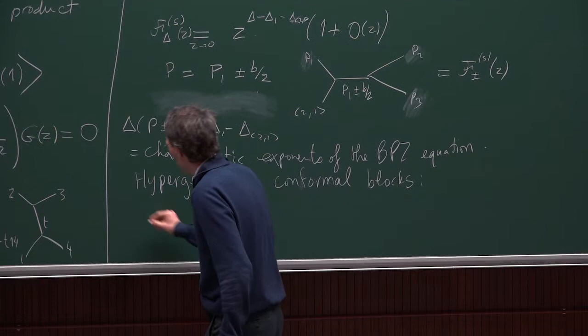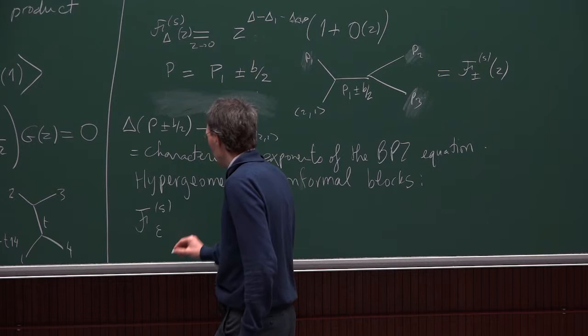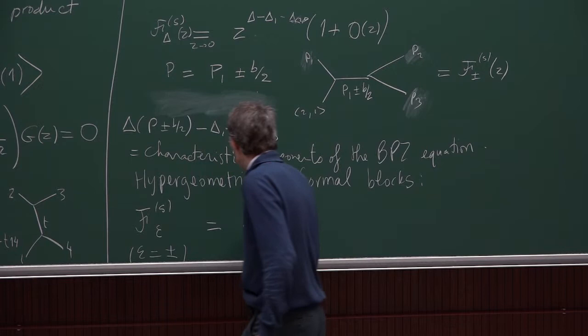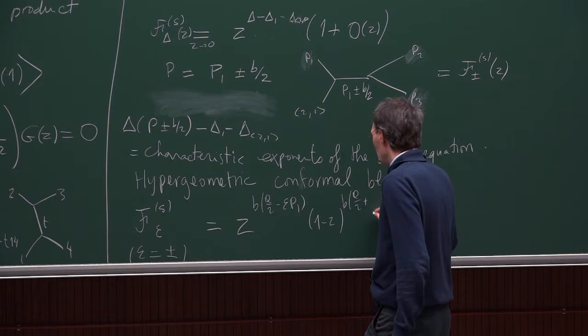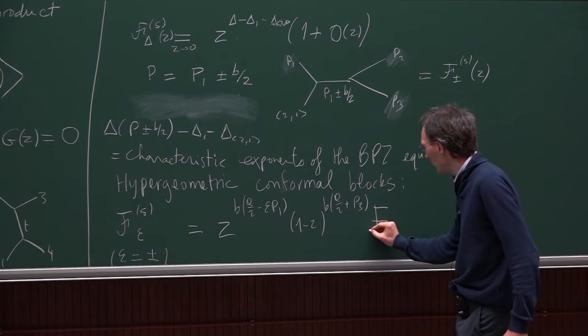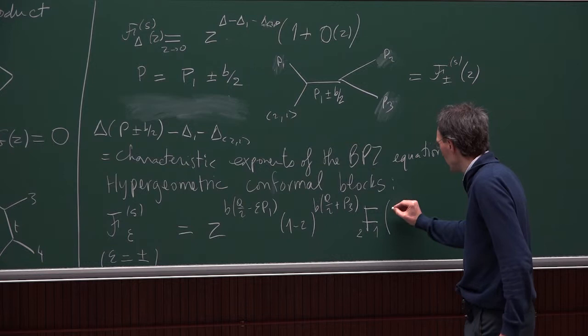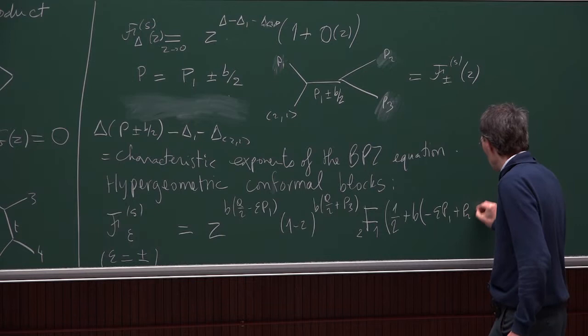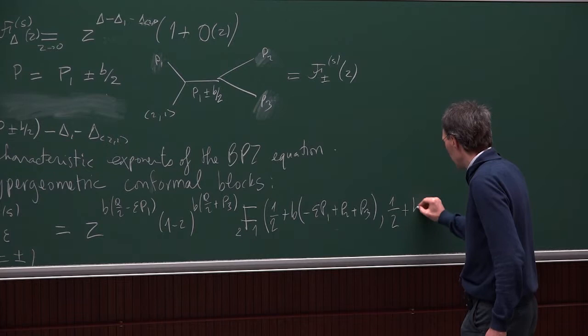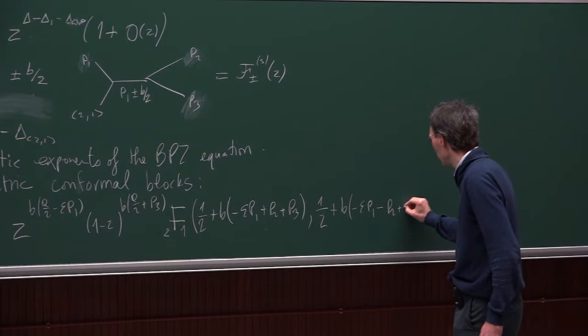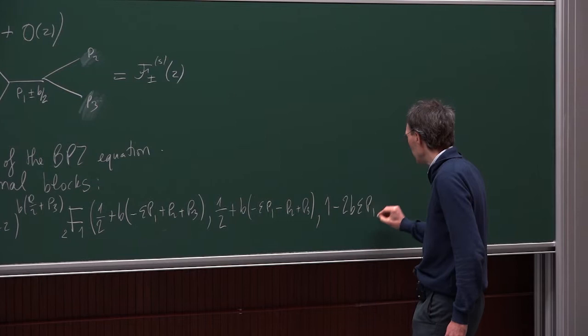The formula for the conformal block F_ε (where ε = ±) is: F_ε(z) = z^(Qb/2 − εP₁) · (1−z)^(Qb/2 + P₃) · ₂F₁, where ₂F₁ is the hypergeometric function with parameters (1/2 + b⁻¹ − εP₁ + P₂ + P₃), (1/2 + b⁻¹ − εP₁ − P₂ + P₃), (1 − 2bεP₁), and argument z.